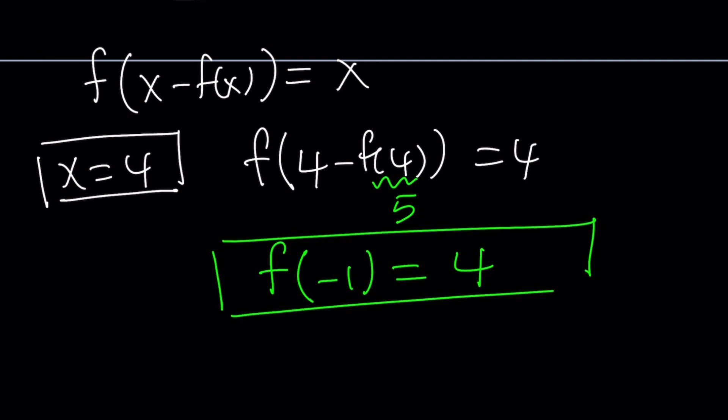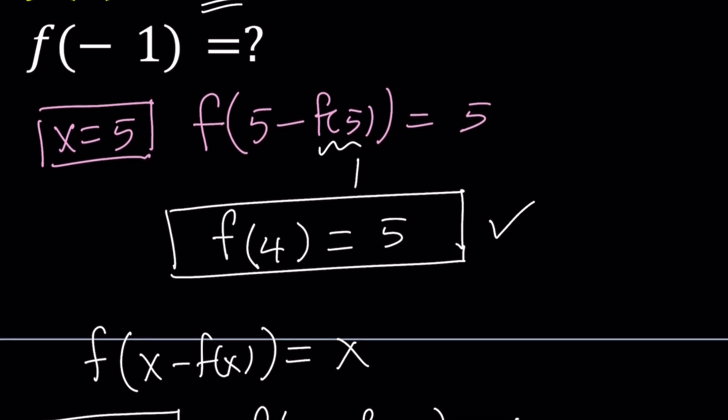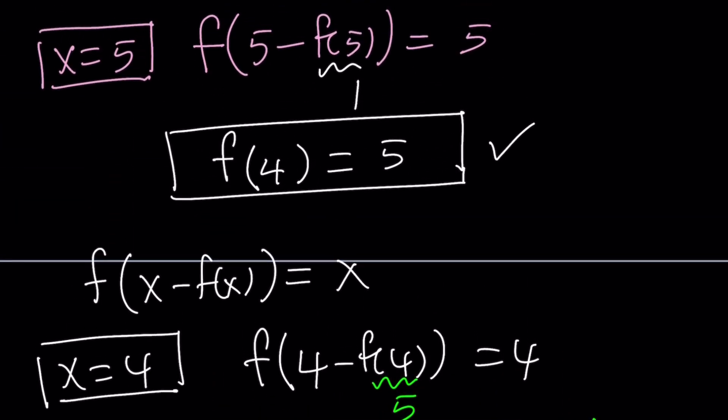And that's actually what we're looking for, right? The question was finding f of negative 1 and we did and the answer is 4. Now I told you this is going to be a real quick video so we're almost done.